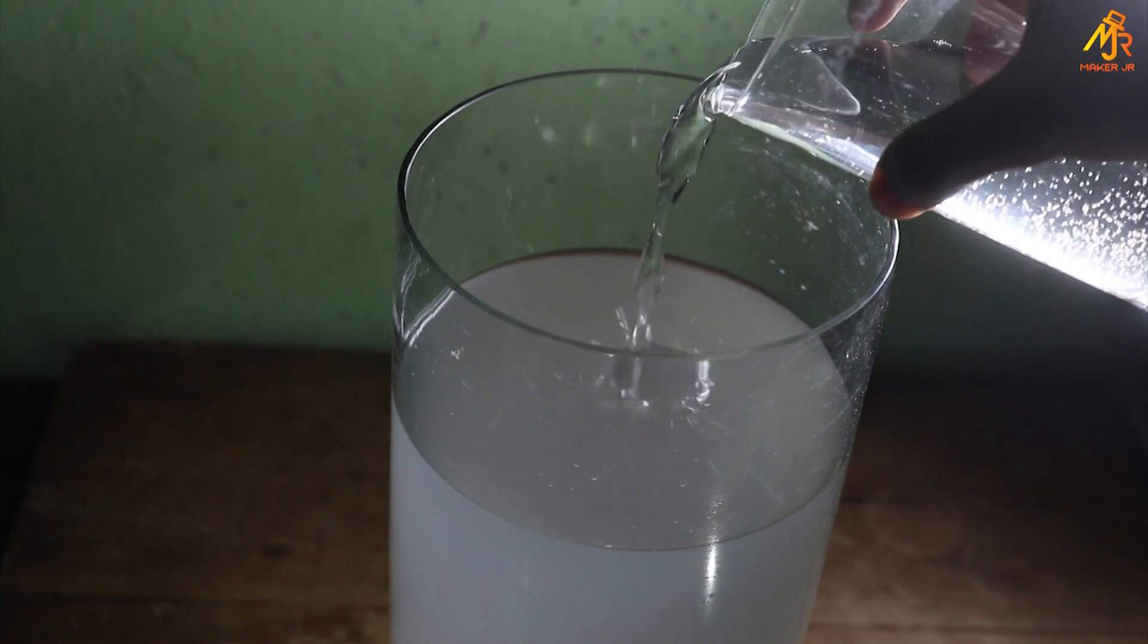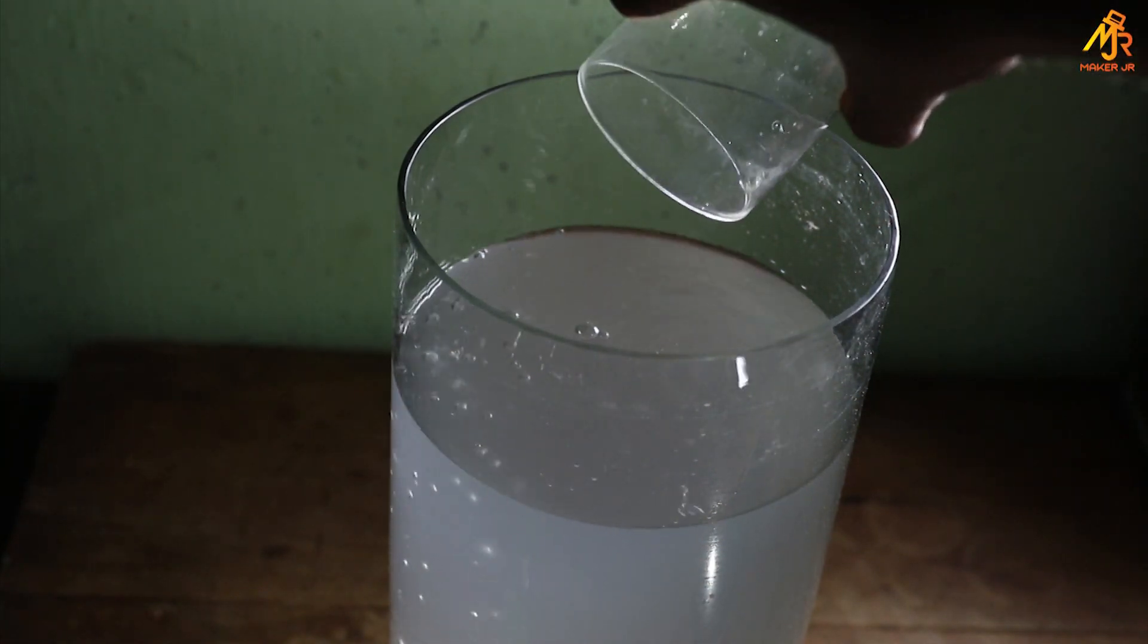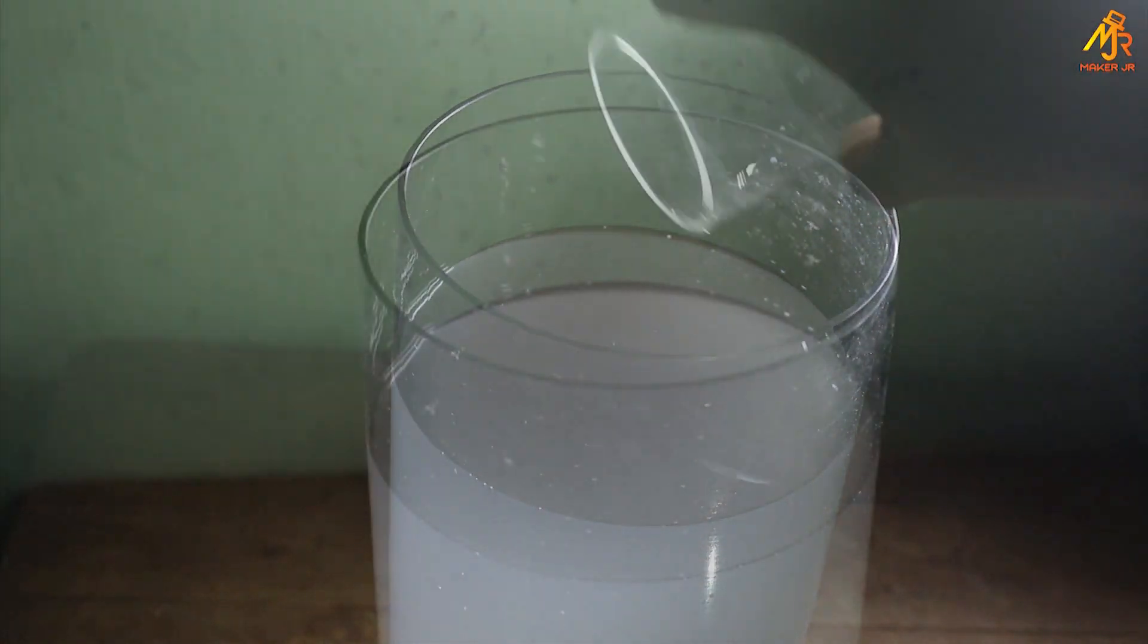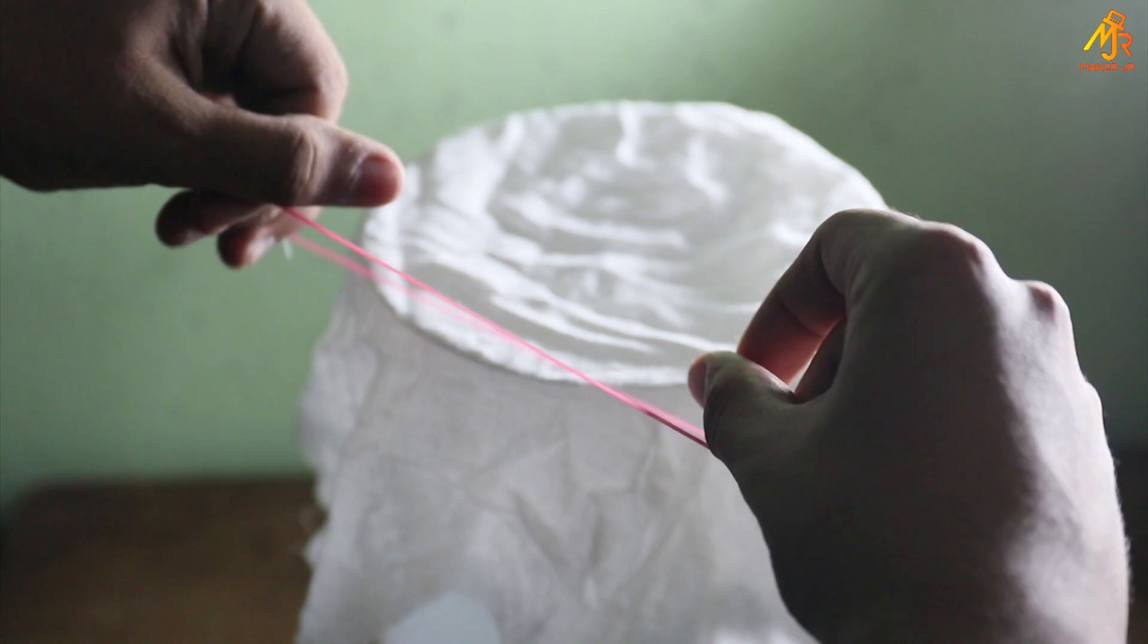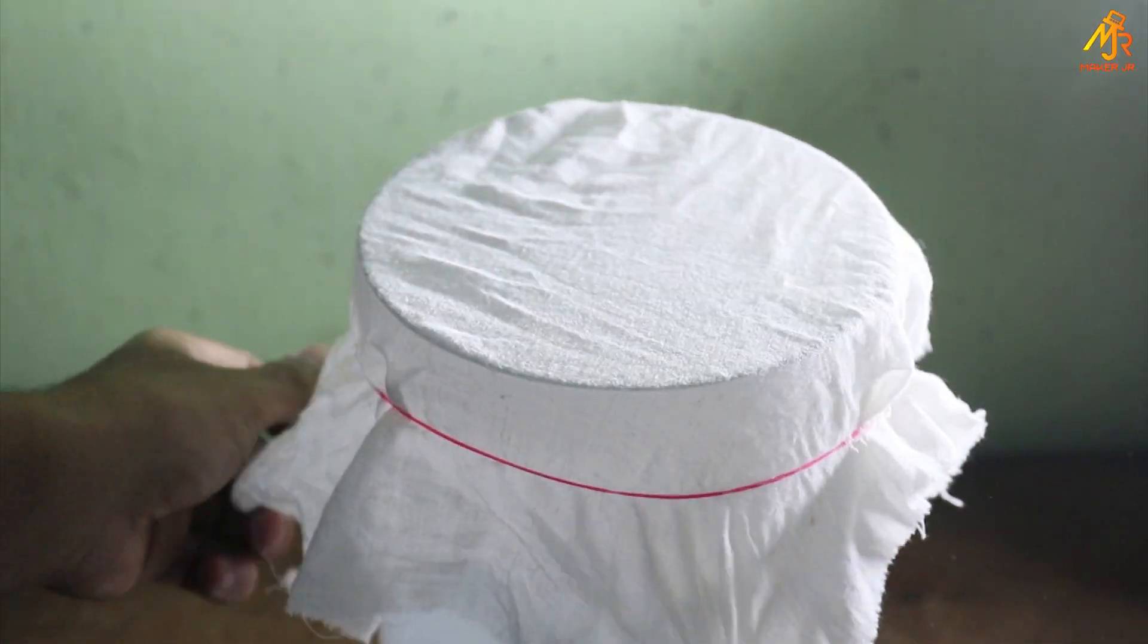Now add the starter culture to the container and cover the top with a breathable cloth or net and secure it with a rubber band. This is done to prevent aquatic insects from entering the culture and also to prevent mosquitoes from laying their eggs in the culture.